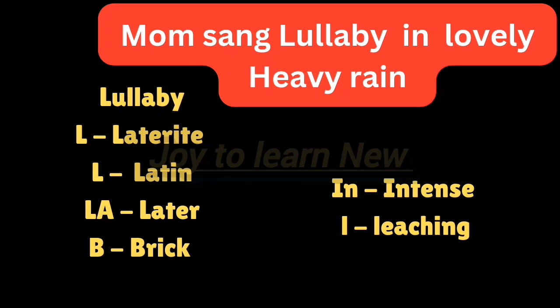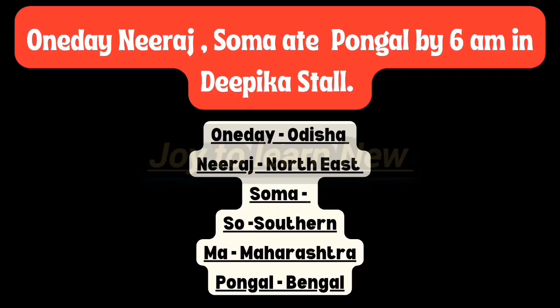The next shortcut is: 'One day Neeraj and Soma ate Pongal by 6 a.m. in Deepika stall.' Here, 'one day' — O and D represent Odisha. 'Neeraj' — N E stands for North East. 'Soma' — S O stands for Southern, M A stands for Maharashtra. 'Pongal' rhymes with Bengal. So laterite soil is found in Odisha, Southern states, North Eastern region, Maharashtra, and some parts of Bengal.